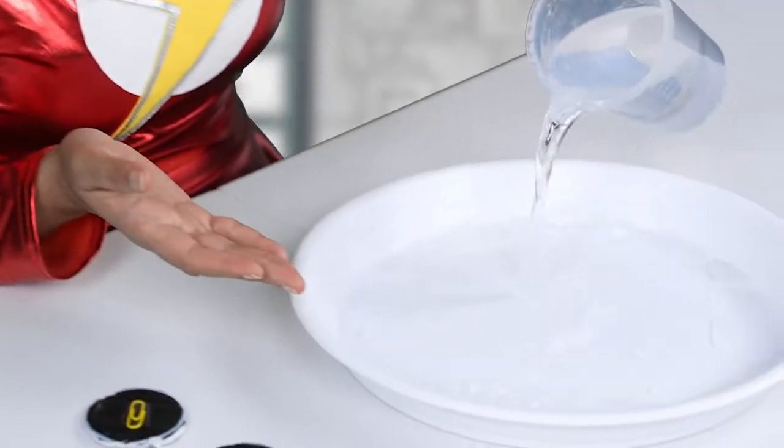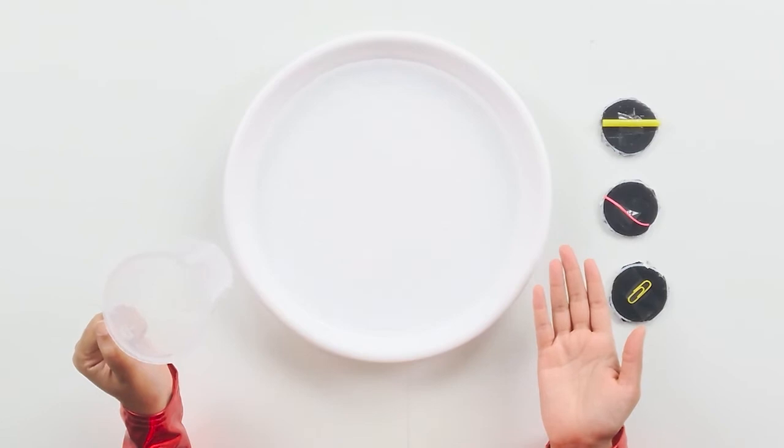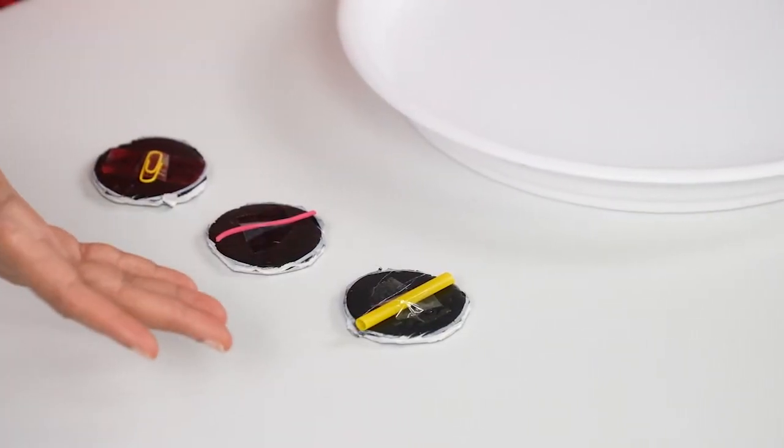Right, so next let's fill a shallow bowl halfway with water. That looks pretty good to me. Oh, these three items actually kind of look like compasses, don't they? But which ones will actually work like a compass?